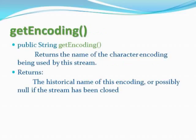Method details. getEncoding: public String getEncoding(). Returns the name of the character encoding being used by this stream. Returns the historical name of this encoding, or possibly null if the stream has been closed.